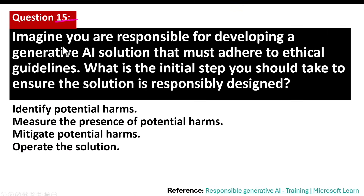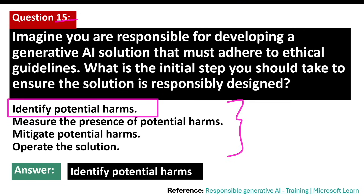Question number 15. Imagine you are responsible for developing a generative AI solution that must adhere to ethical guidelines. What is the initial step you should take to ensure the solution is responsibly designed? The correct answer is identifying potential harms. This is the first stage when planning a responsible generative AI solution — understanding the various ways an AI system could pose risks or cause unintended consequences, allowing developers to address them early in the design process.